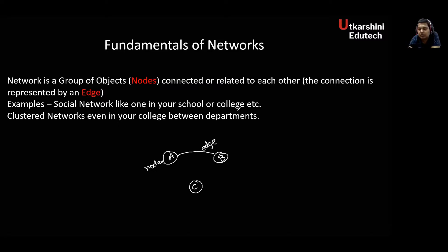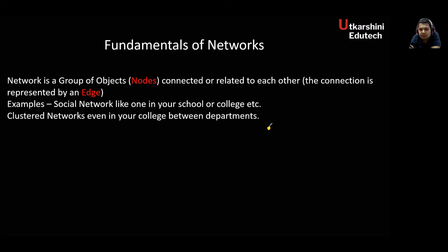A simple example is a social network among your school and college friends. Another example is a clustered network within your college between departments. Let's take 20 people: I'll represent people from the CS department using yellow, mechanical department using red, and electronics using green — three category groups.